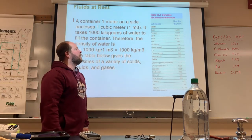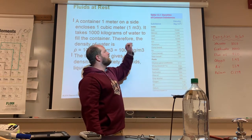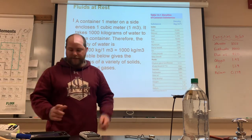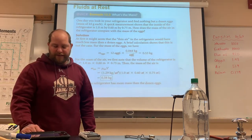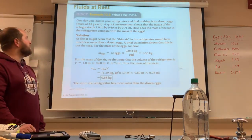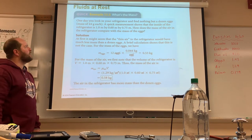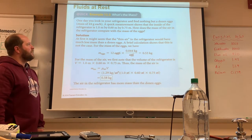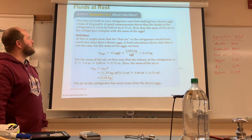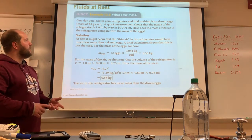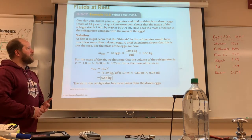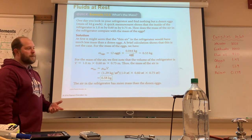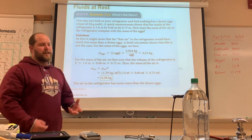Density is calculated as density equals mass divided by volume — pretty easy. Here's a fun problem: one day you look in your refrigerator and find nothing but a dozen eggs. A quick measurement shows the inside of the refrigerator is 1 by 0.6 by 0.75 meters. How does the mass of the air in the refrigerator compare with the mass of the eggs?